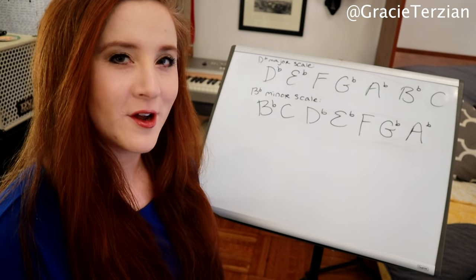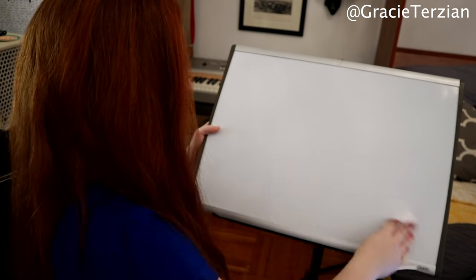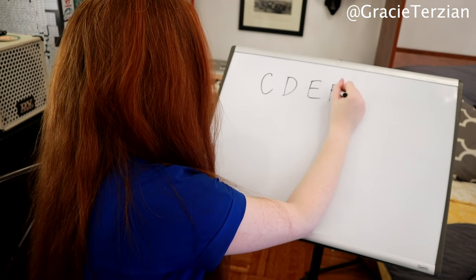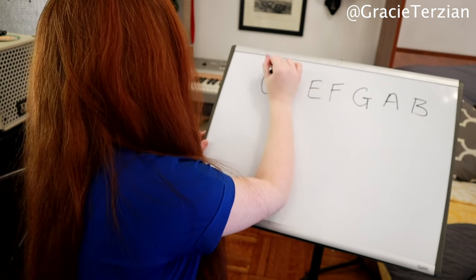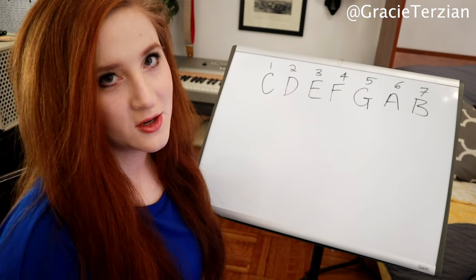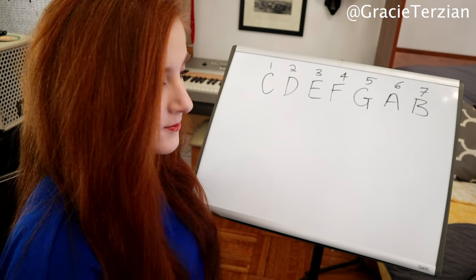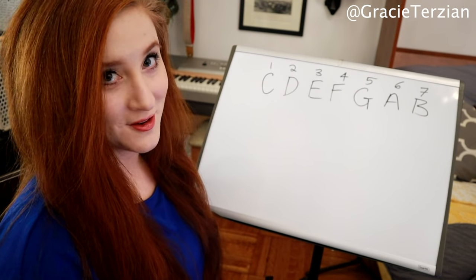Let's look at another way to figure out the relative minor key. The second way is to look at the sixth degree of the major scale. Let's go back to C major and write out a C major scale. Now let's number the scale. The sixth degree is — one, two, three, four, five, six — it's A. So A minor is our relative key.